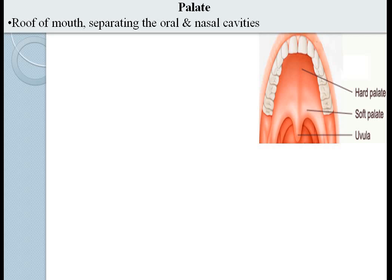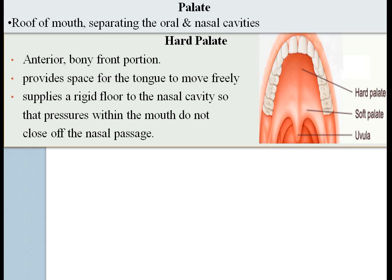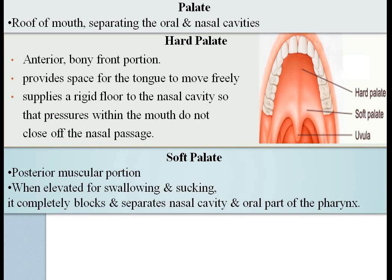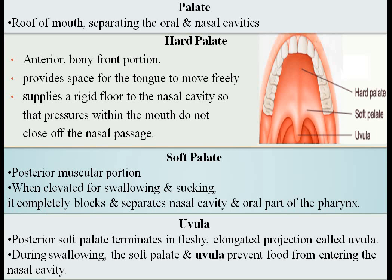The roof of the mouth is called the palate, which separates the oral and nasal cavities. The anterior bony portion is called the hard palate — it provides space for the tongue to move freely, acts as the roof of the mouth and the floor of the nasal cavity, so pressure within the mouth does not close off the nasal passage. The posterior muscular portion is called the soft palate. During swallowing, the soft palate is raised to completely block the nasal cavity so food moves into the pharynx. The posterior soft palate ends in a fleshy elongated projection called the uvula, which along with the soft palate prevents entry of food into the nasal cavity during swallowing.